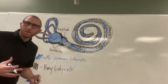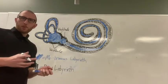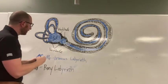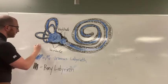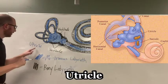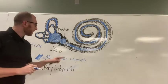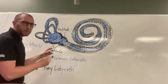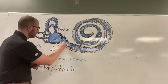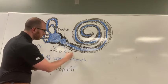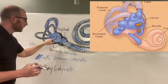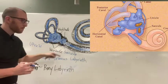Inside the vestibule there are two bumps — those are the membranous structures. The big one I'll mark with a U — that's called the utricle. The other one I'll mark with an S — that's called the saccule.